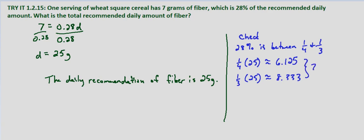So it makes sense that if 7 is 28%, the daily recommendation of fiber is 25 grams.